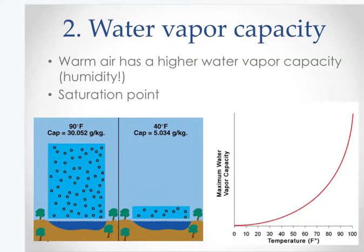Water vapor capacity is the amount of water vapor that air can hold — this is the fancy way of talking about humidity. Warm air can dissolve more water; that's just basic solution chemistry. To increase solubility of a solute in a solvent you increase the temperature of the solvent. In this case air is the solvent and water is the solute. So as you increase temperature you can hold more solute — increase the temperature of the air and you increase the water vapor capacity.